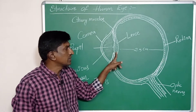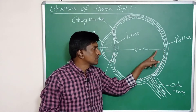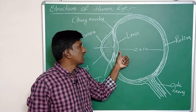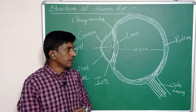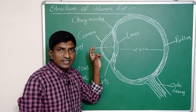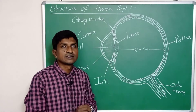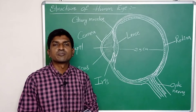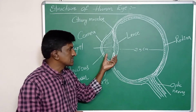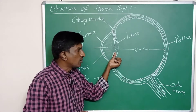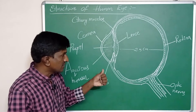The images formed by the eye lens are always formed on the retina. We know from refraction of light at curved surfaces that a convex lens forms images at different places as the distance of the object changes. Based on the distance of the object, the convex lens forms the image in different places. But in the case of the eye lens...